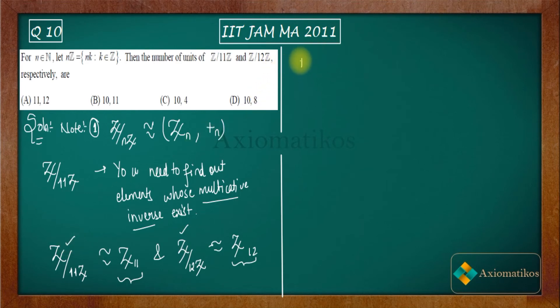So what's the formula for that? The number of units in Zn is given by Euler's phi function of n. I hope you understand this Euler phi function; if not, you can look at any book to learn what Euler's phi function is.